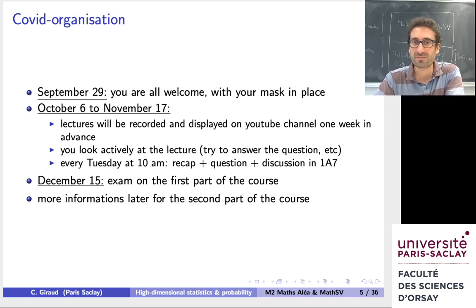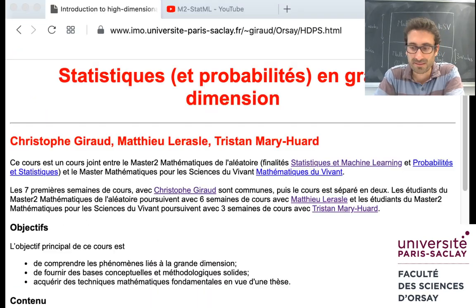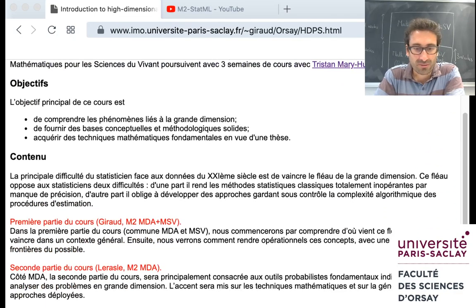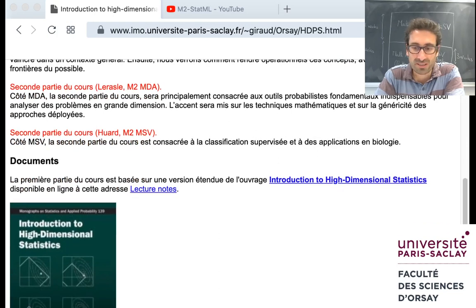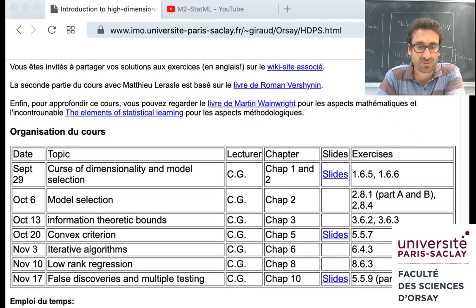For the second part of the course, you will have the information later. As you can understand, we still don't know how it will work, even for October. If you want more information, the best is to look at the website of the course. On this website you will find a short presentation of the course, and you can also look at the lecture notes that you can download — the extended version, a short version, and a paper version. You also have more information about the organisation of the course.